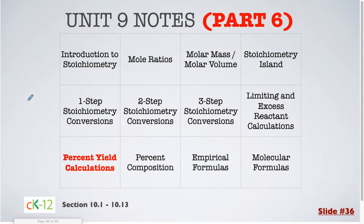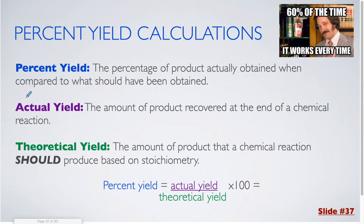In part 6 of the unit 9 notes, we are going to be covering percent yield calculations. Percent yield is the percentage of product actually obtained when compared to what should have been obtained. This is the actual yield divided by the theoretical yield.